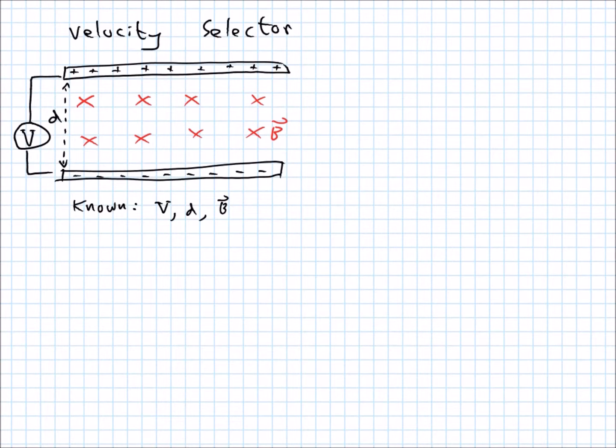Hello. So here we have a velocity selector. We know the voltage across these plates, we know the distance separating the two plates, and we know the strength of this magnetic field. Now this magnetic field, it's from something else that's not in the picture, it's not being caused by the plates or anything like that, but there it is.